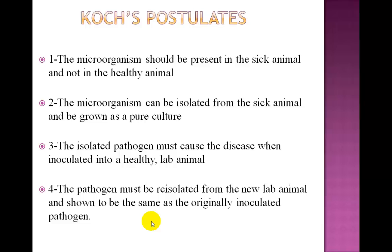Rule 3: the isolated pathogen must cause the disease when inoculated into a healthy lab animal. When a healthy animal is inoculated with the pathogen from pure culture, that animal must develop signs and symptoms of the original disease. Rule 4: the pathogen must be re-isolated from the new lab animal and shown to be identical to the originally inoculated pathogen. The same pathogen present in the original animal must be re-isolated from the infected lab animal under experimental conditions. These rules are referred to as Koch's postulates.